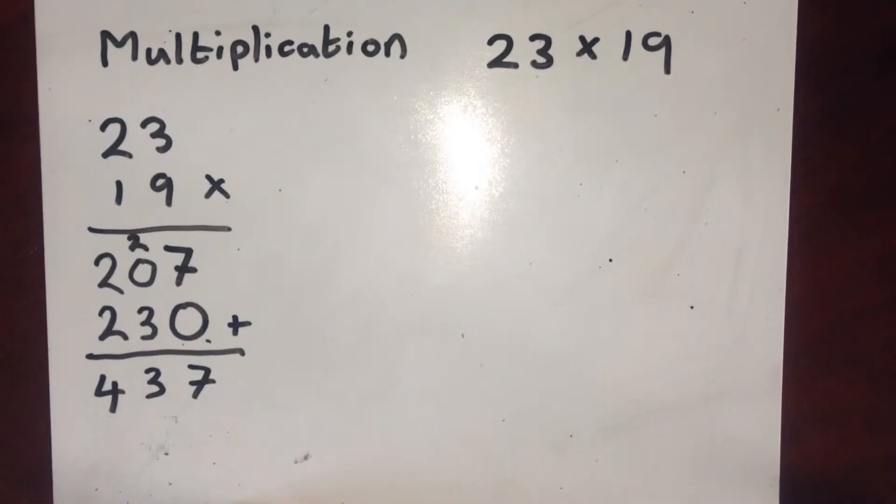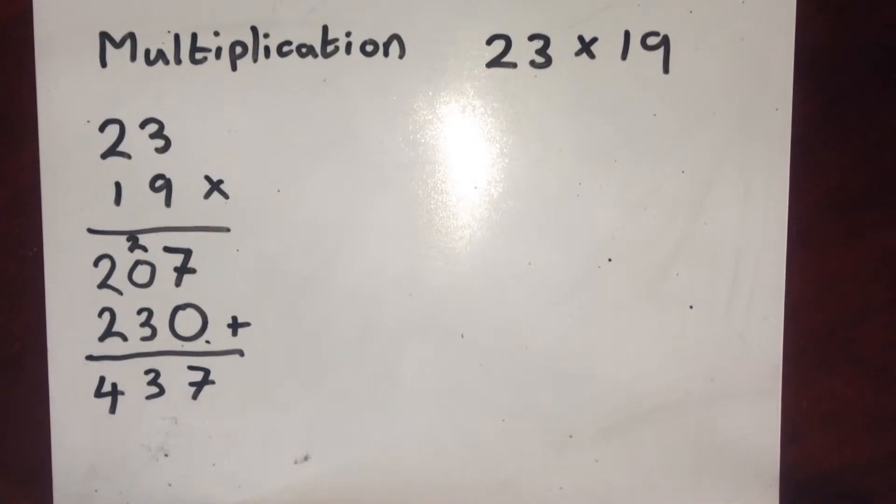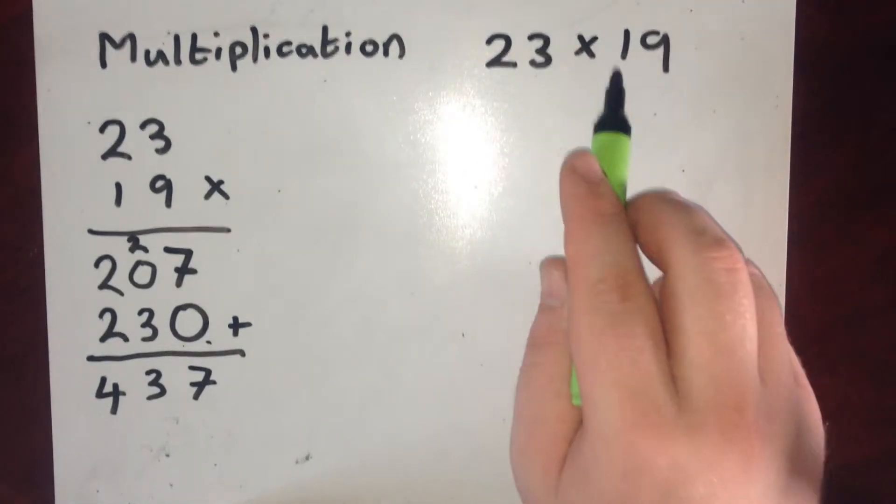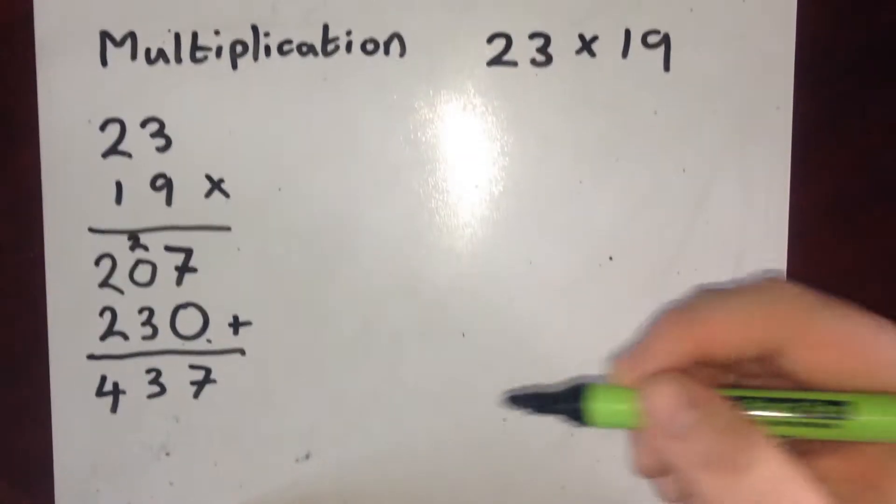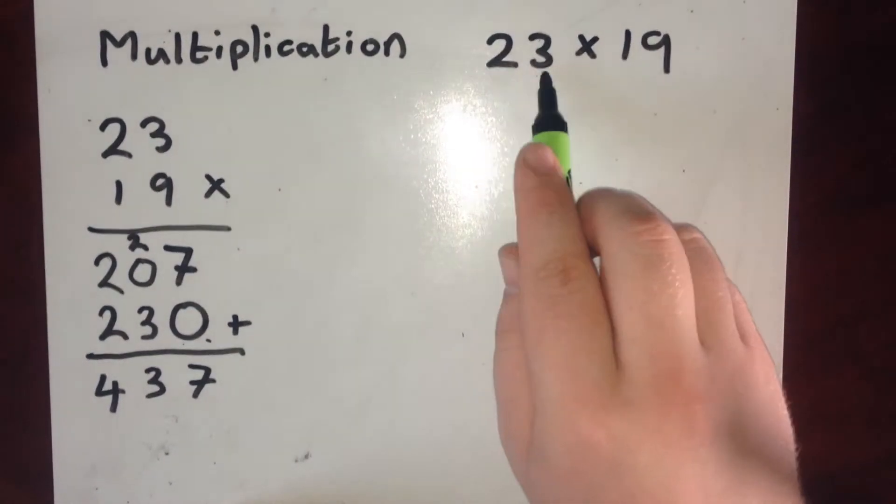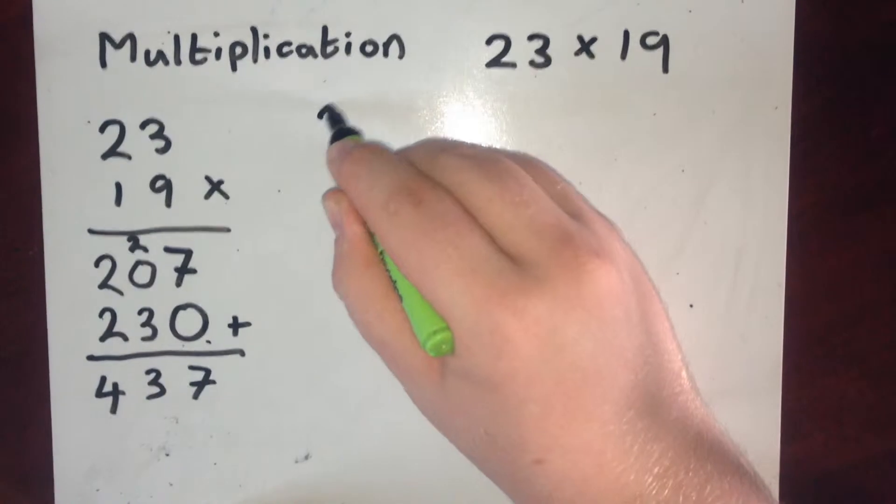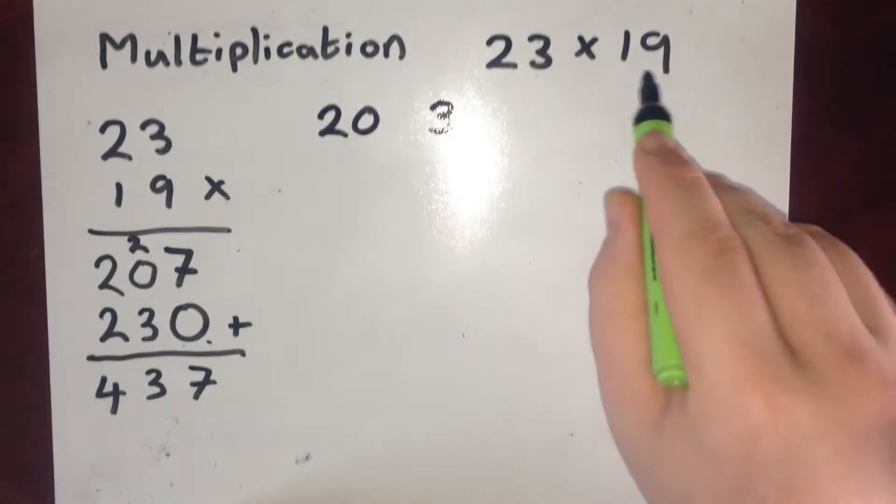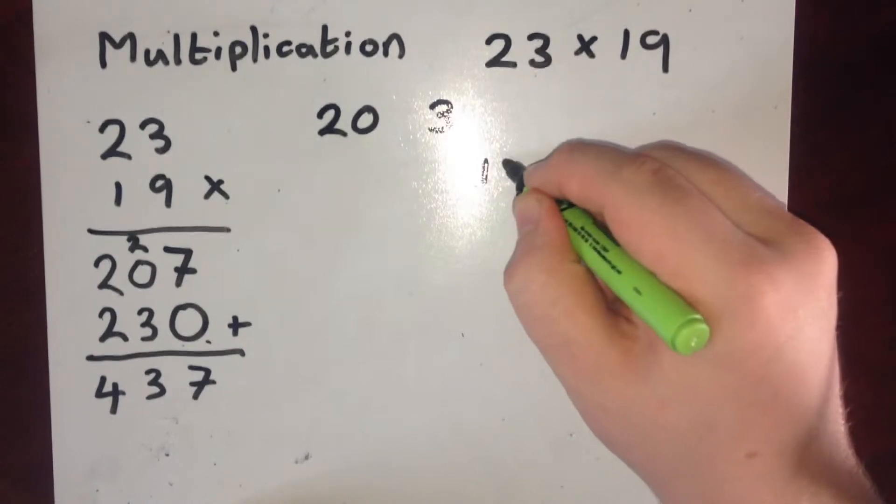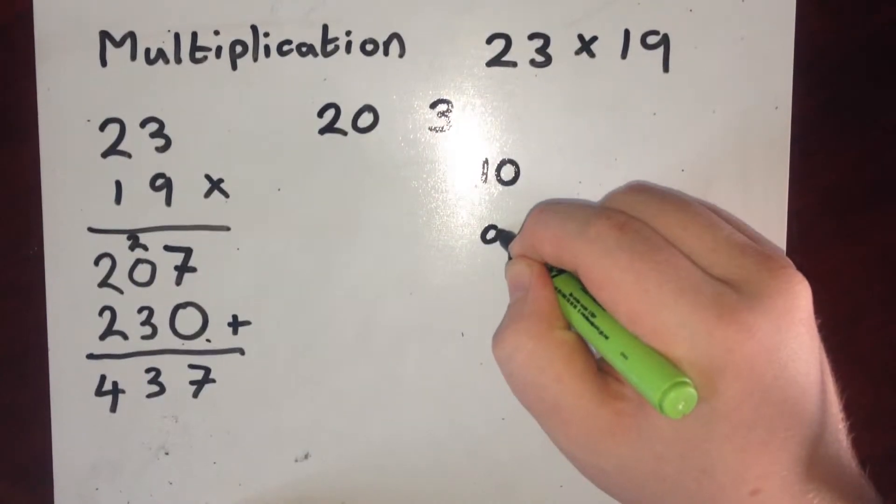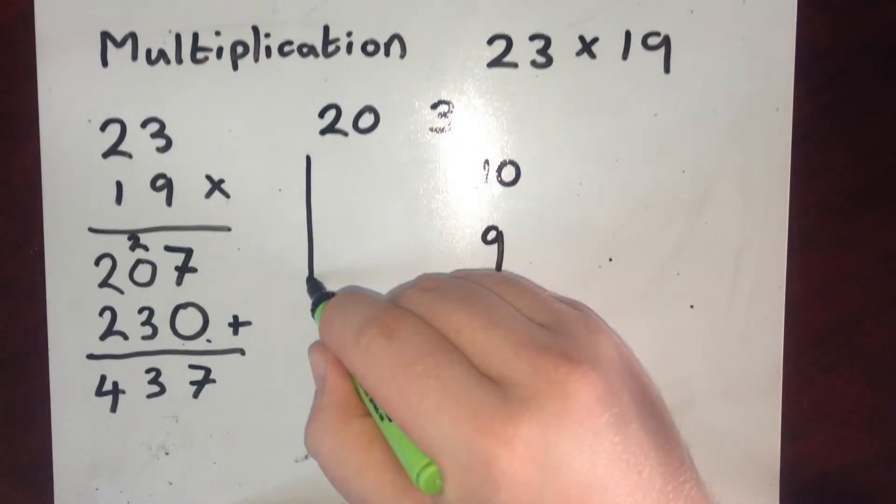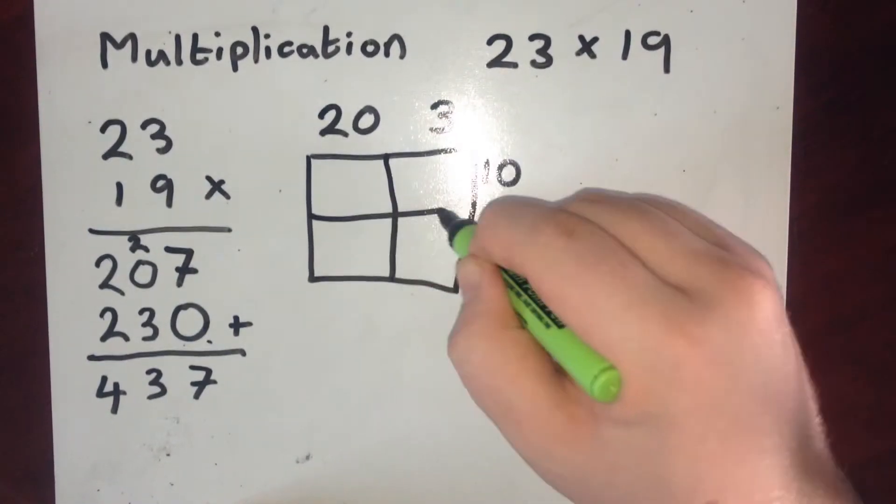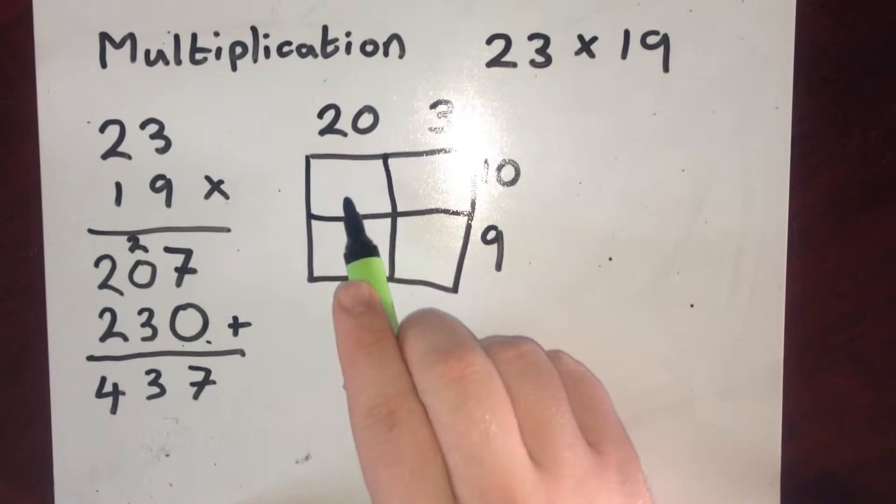The second method I'm going to go through is called the grid method. The grid method involves splitting up this 23 and 19 into the tens and units. So 23 would become 20 and 3 and 19 would become 10 and 9. And then I draw a grid.